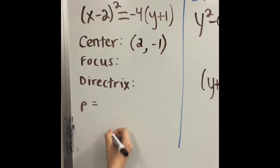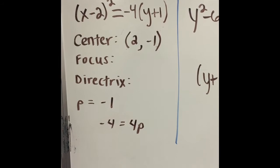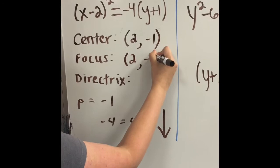To find p, you take the coefficient, which is 4, and the variable p, and set it equal to 4p. Using the p value, you can find the focus and directrix.